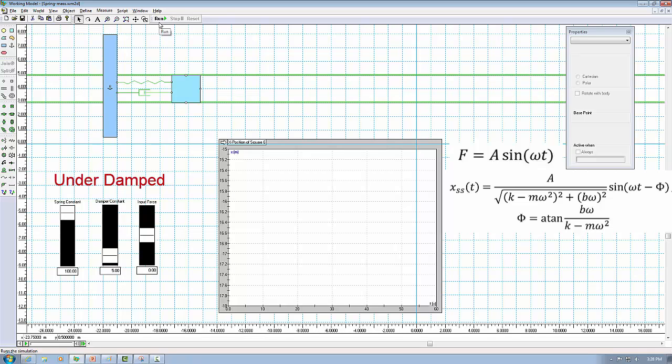Now let's change the input frequency to 0.3 rad per second, which is about 10% of the natural frequency. It should take about the same time to get to steady state when there was no input force. So let's wait for a little bit. You see there are some small oscillations at the beginning, which is due to the system response.